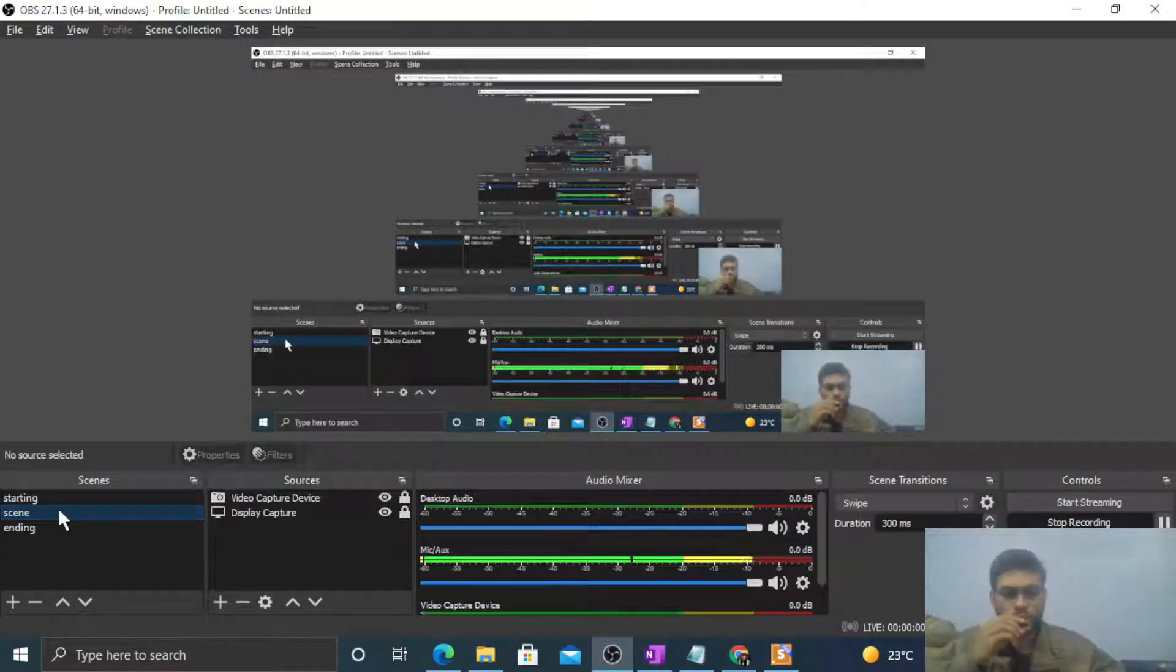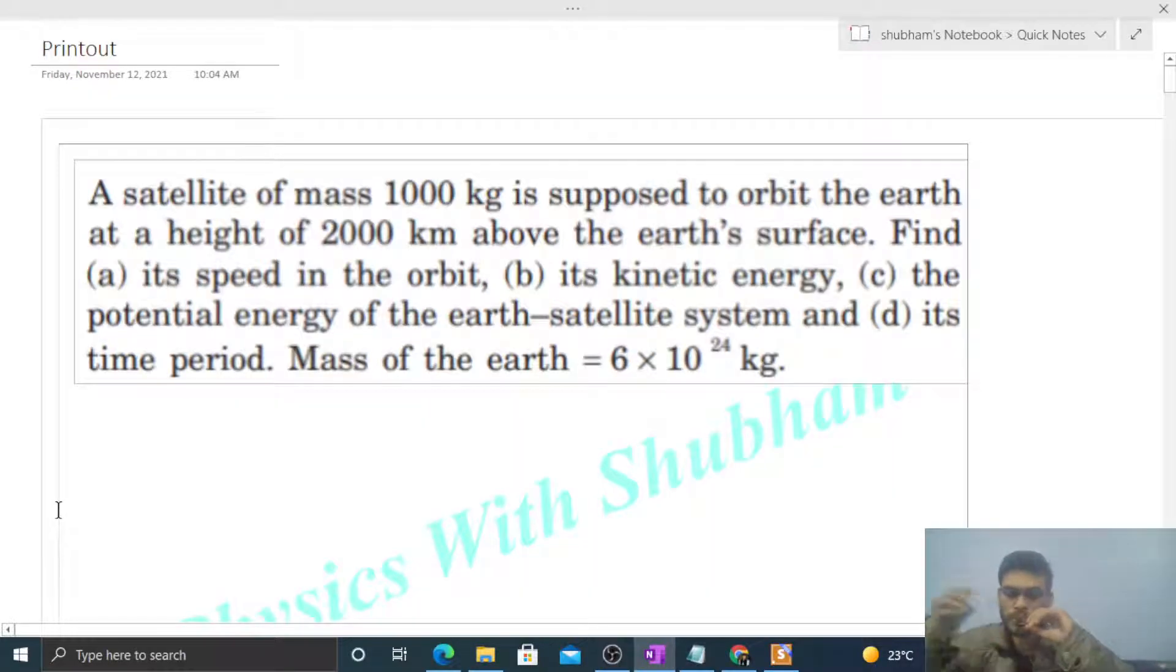Okay, hi everyone. So today let's discuss one interesting problem. It says a satellite of mass 1000 kilogram is supposed to orbit the Earth at a height of 2000 kilometer above the Earth's surface. Find its speed in the orbit.